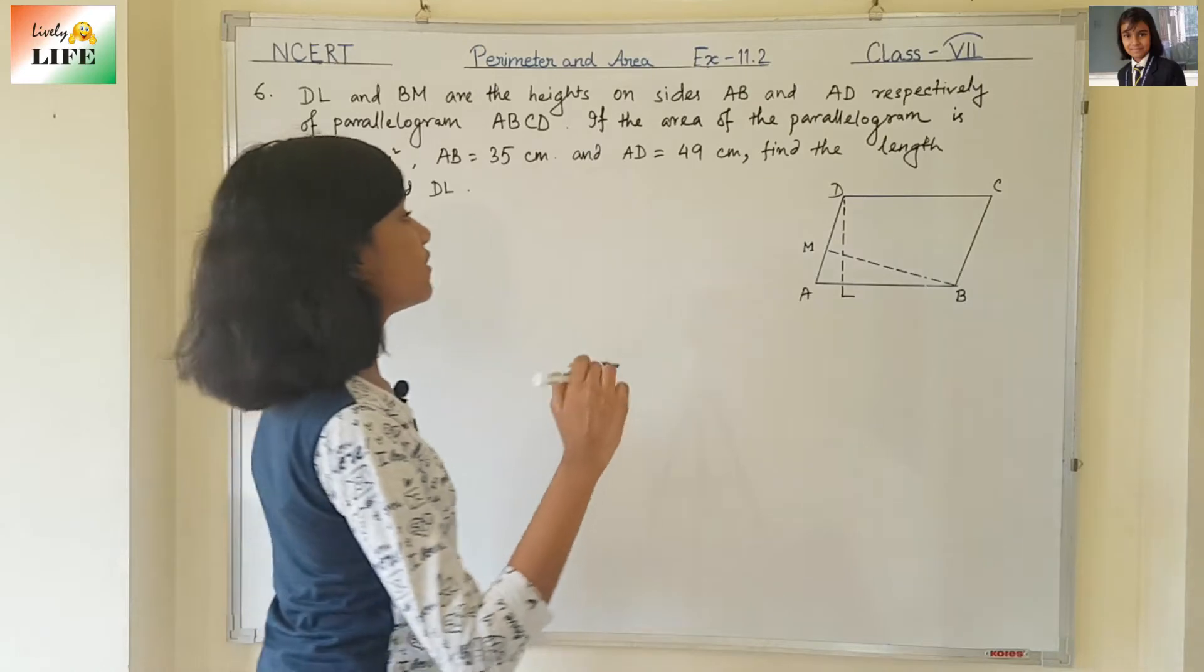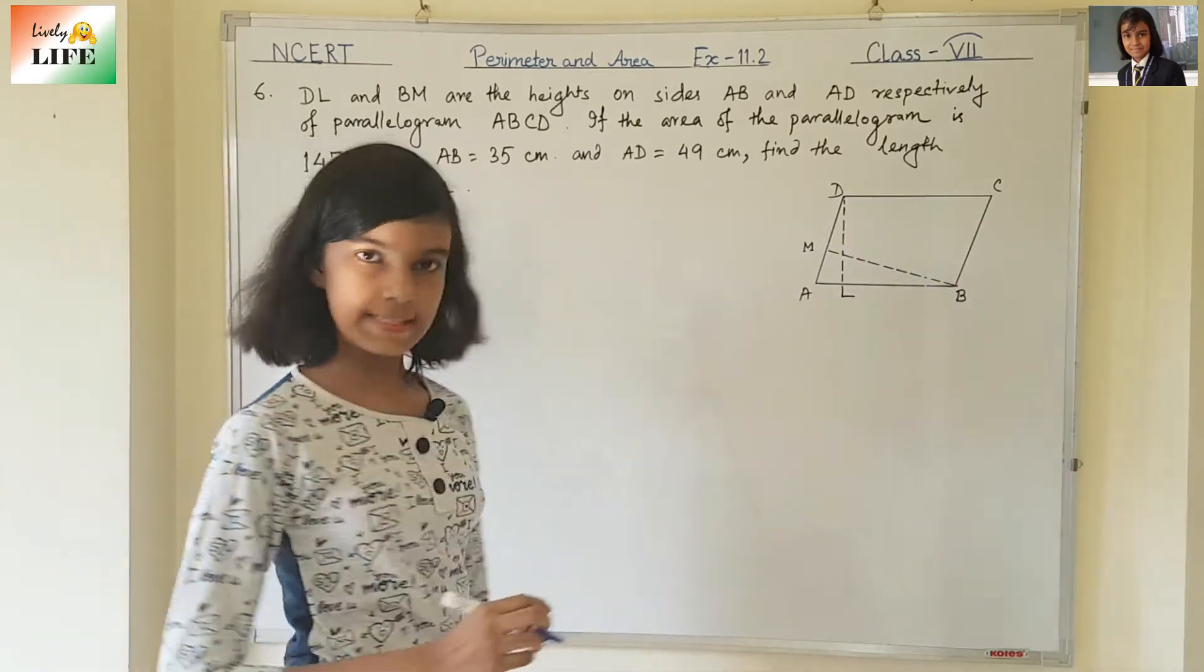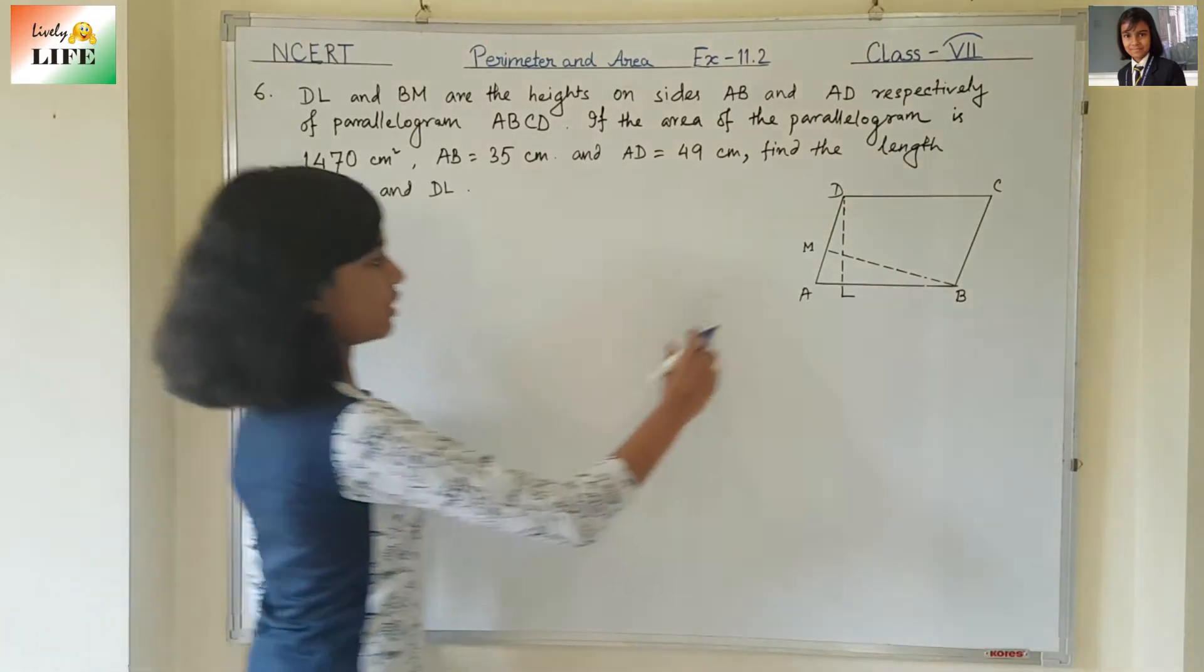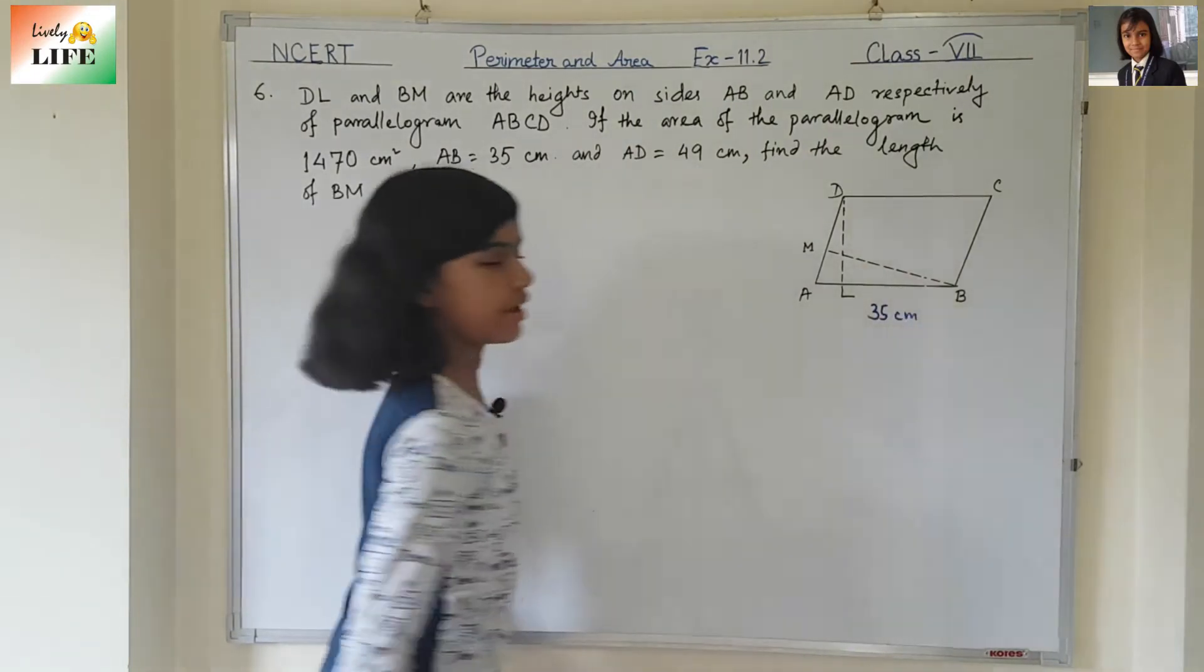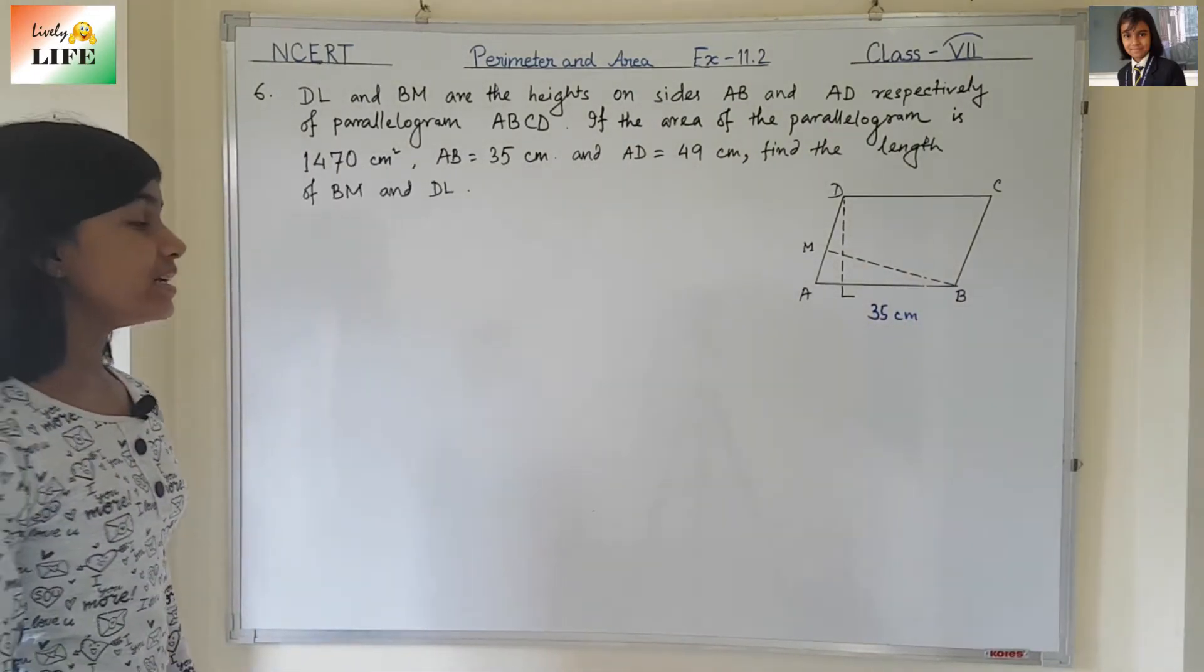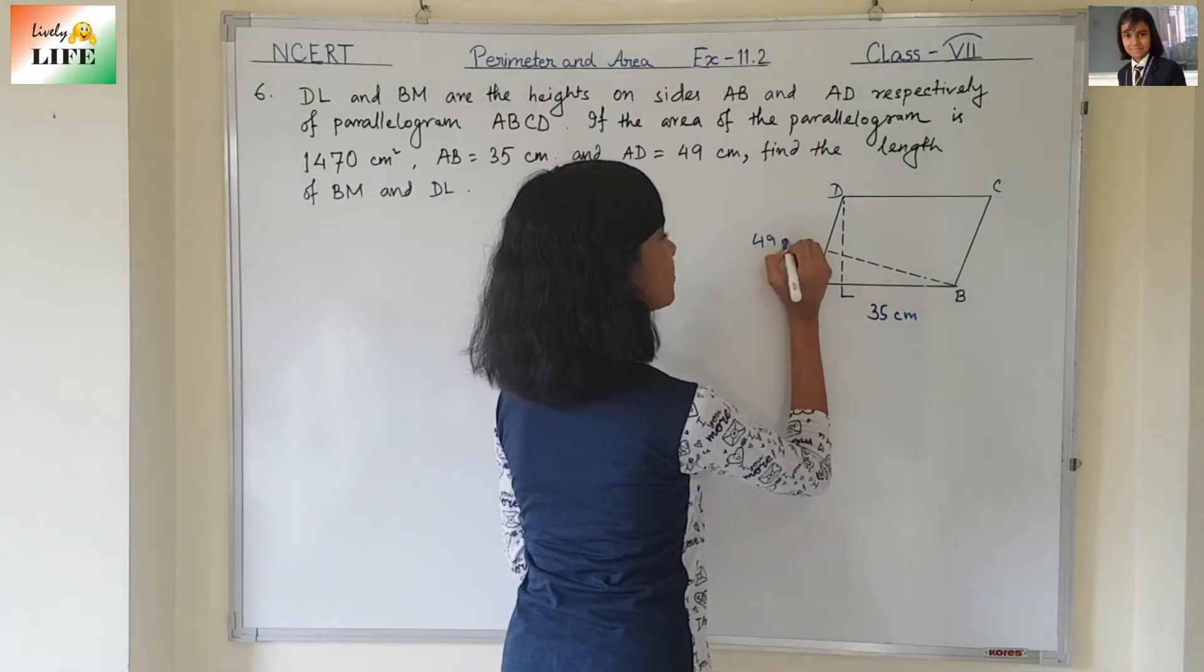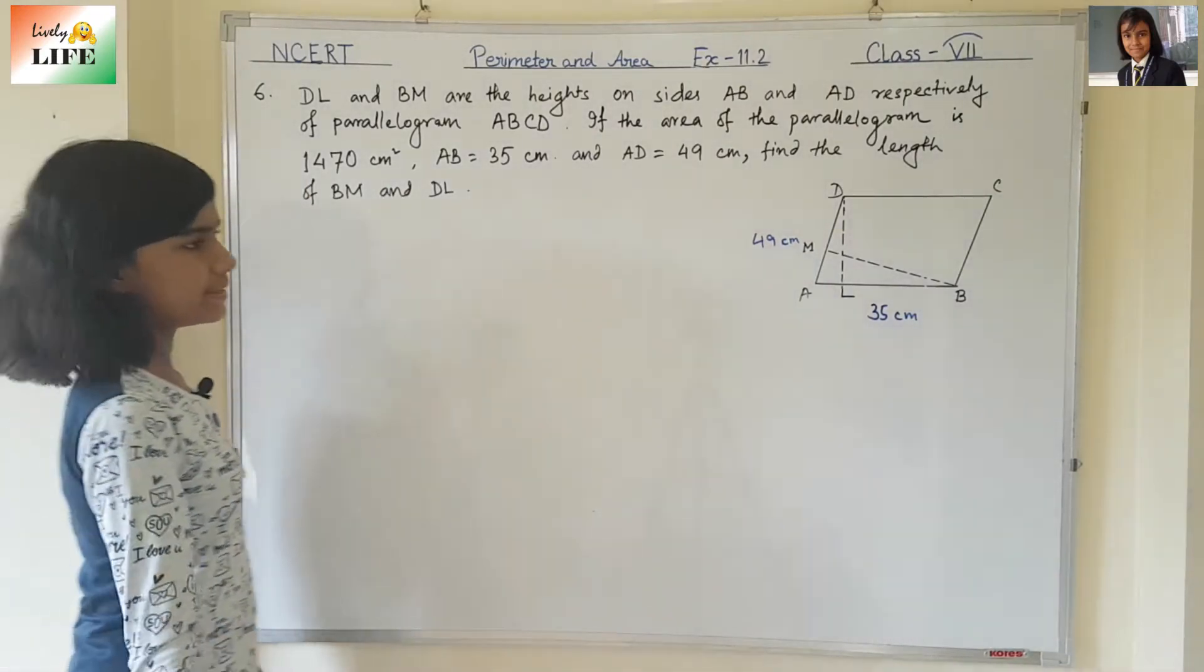If the area of the parallelogram is 1470 cm squared, area is given. AB is equal to 35 cm, and AD is 49 cm.